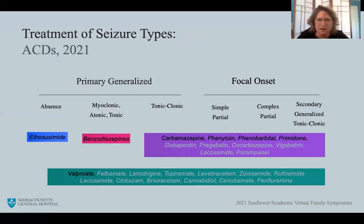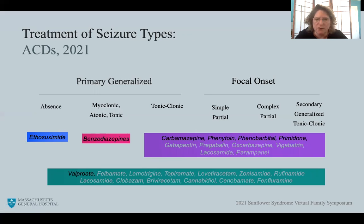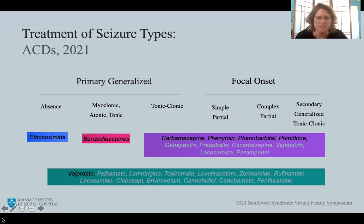This slide shows our current anti-seizure medications. Those in a lighter font are newer medications available in the past 20 years — many are better tolerated with improved side-effect profiles and are quite effective. Medications in the green bar are referred to as broad-spectrum, meaning they can treat both generalized and focal seizures. Since we view Sunflower Syndrome as a generalized epilepsy, ethosuximide, valproate, benzodiazepines, and other medications in the green bar can be used. A later talk will discuss which medications have been found effective for Sunflower Syndrome.